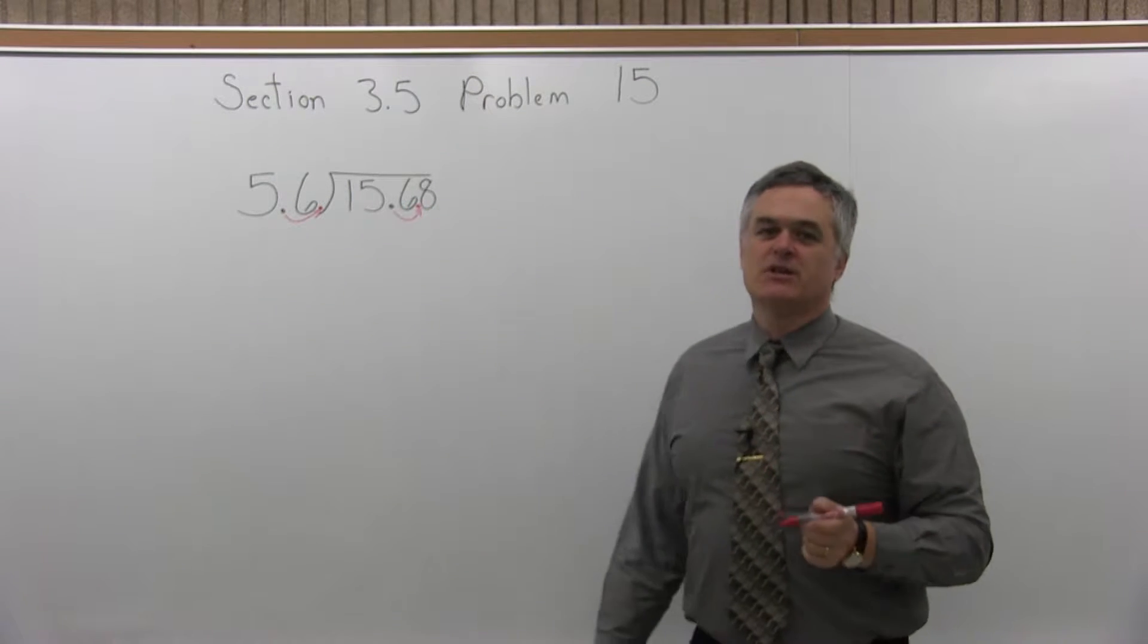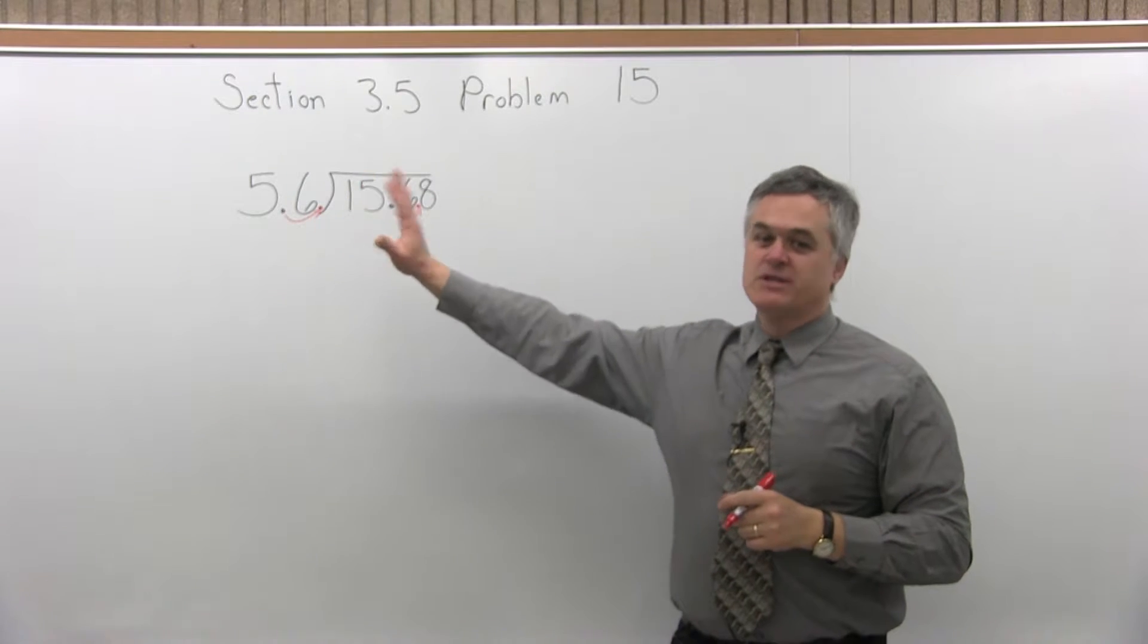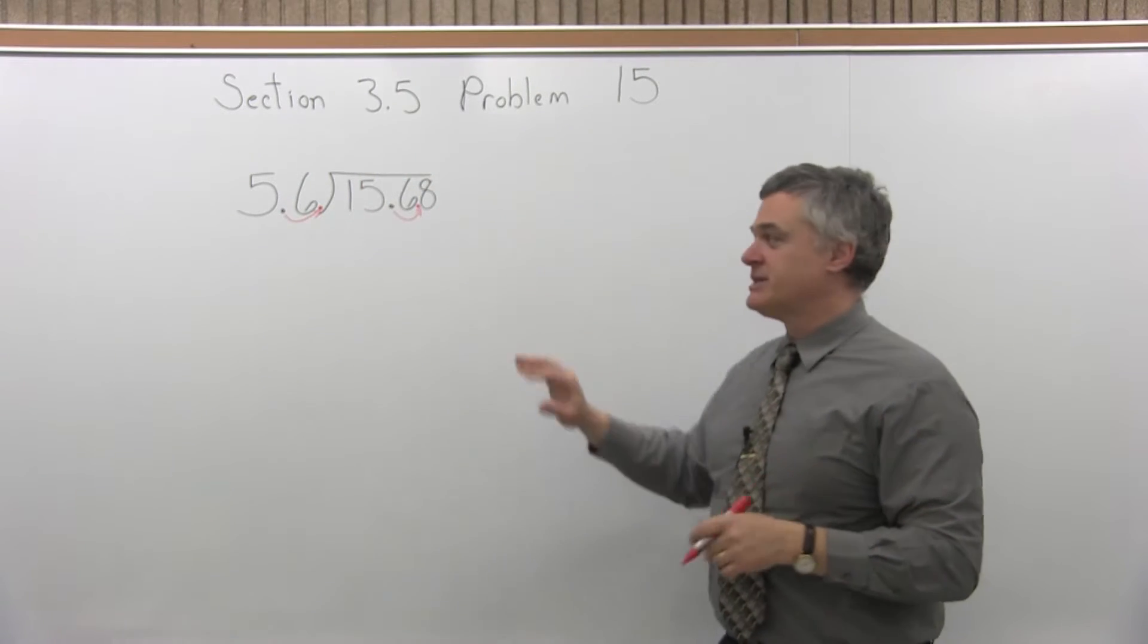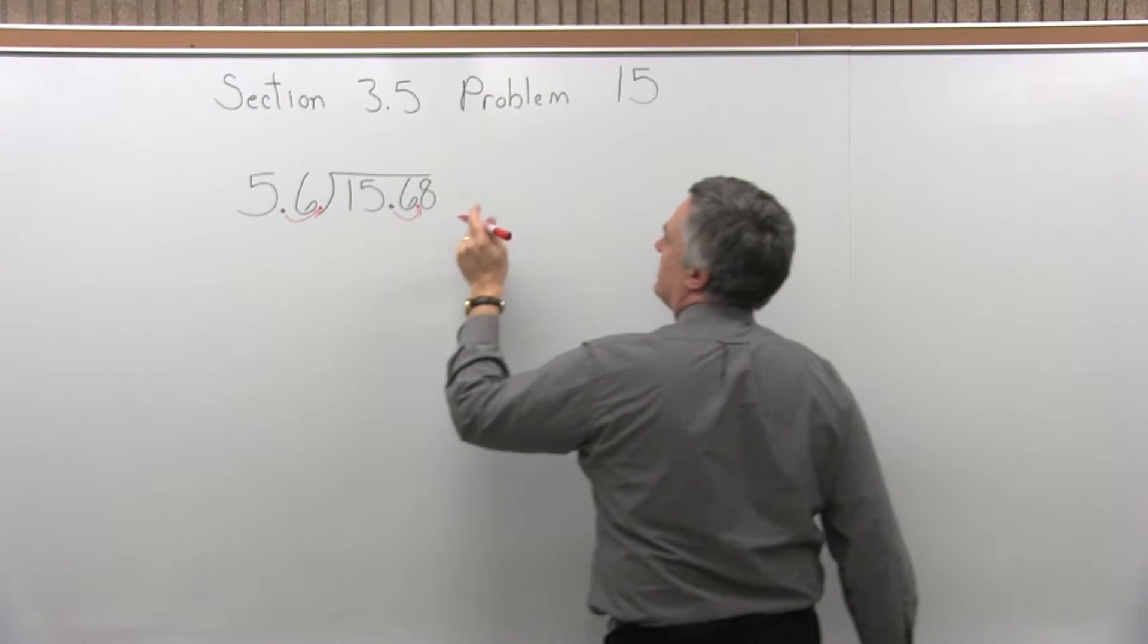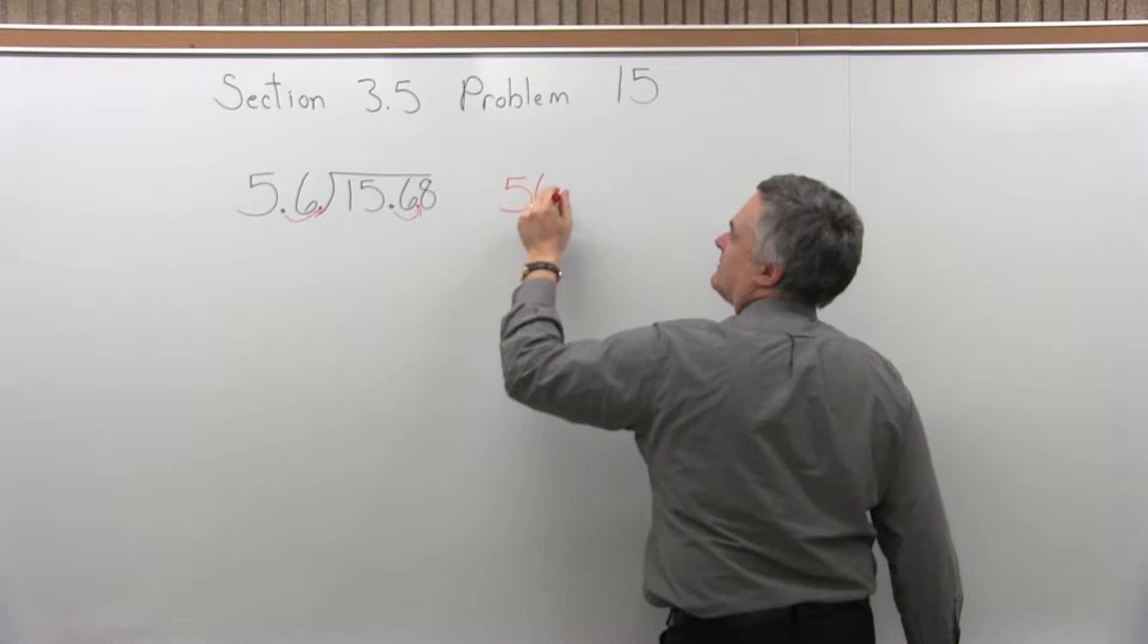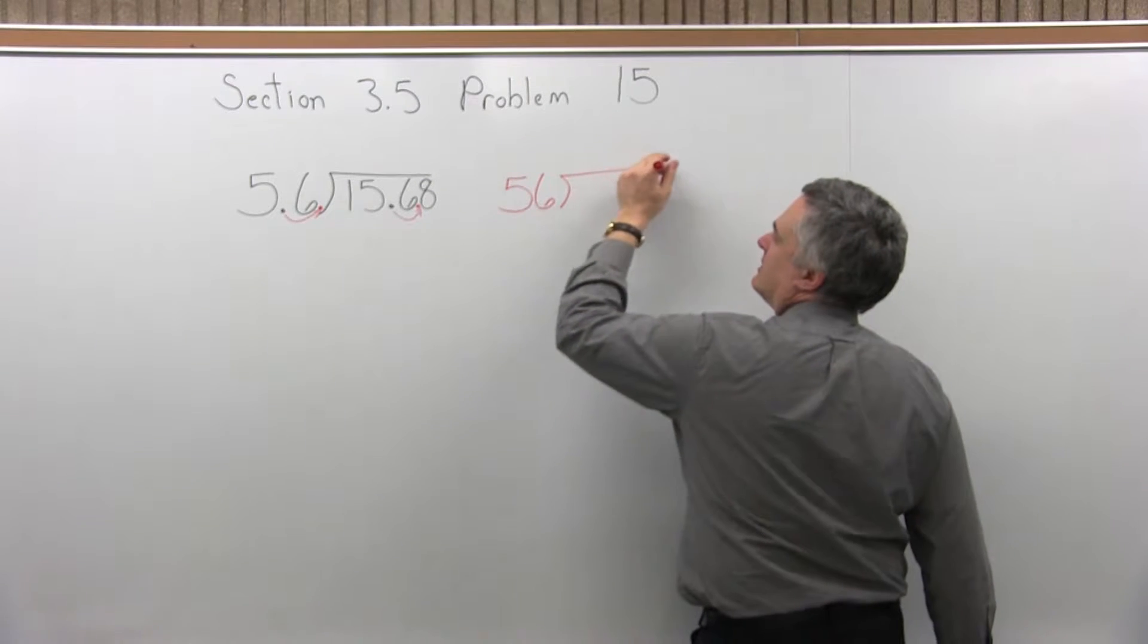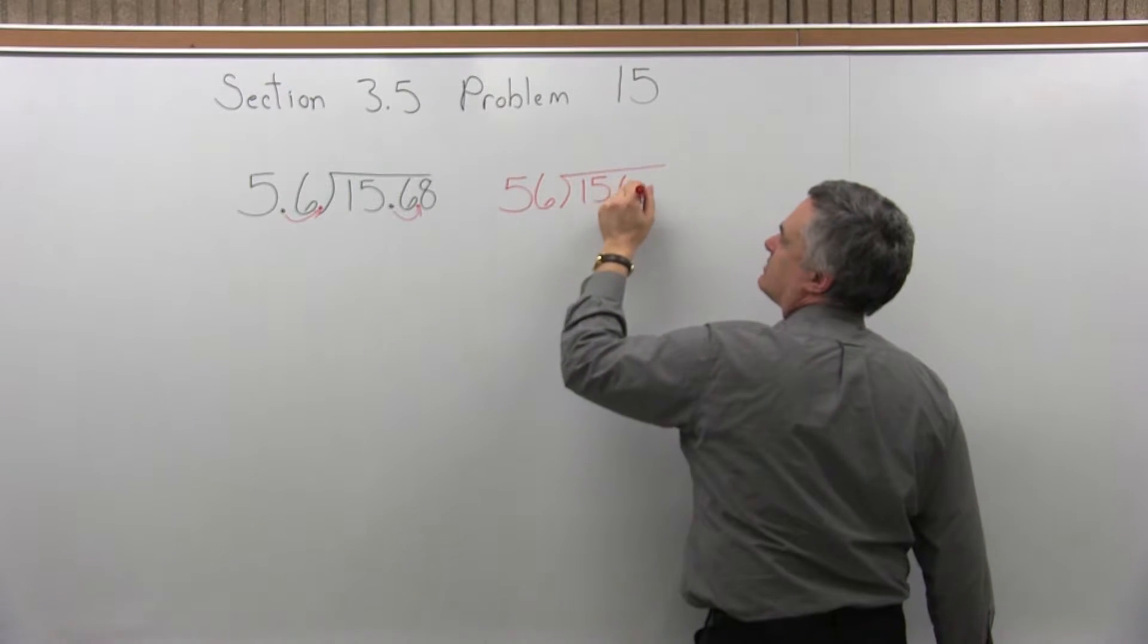In this particular problem, one spot. But if the one in front had to move eight spots, the one underneath has to move eight spots. Same number, whatever it is. So for this one, one spot. Underneath, one spot. So I can even rewrite this problem as 56 divides into 156.8.